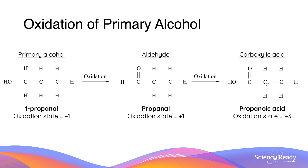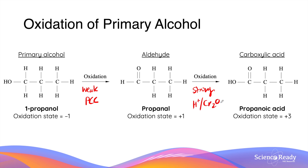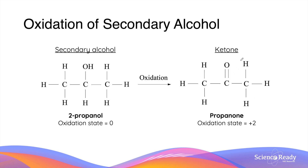Aldehydes and carboxylic acids can be produced from the oxidation of a primary alcohol. Oxidation of a primary alcohol first produces an aldehyde, which is in turn oxidized to produce a carboxylic acid. A weak oxidizing agent such as PCC is used to produce an aldehyde from a primary alcohol. A strong oxidizing agent such as acidified dichromate ion is used to further oxidize an aldehyde to produce a carboxylic acid. A ketone functional group is produced when a secondary alcohol is oxidized, also using oxidizing agents such as acidified dichromate.